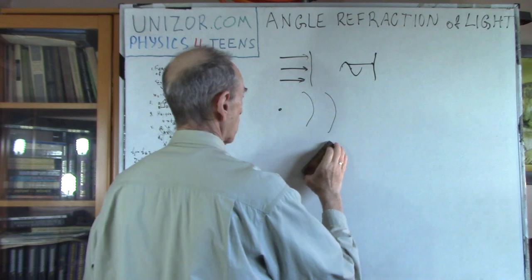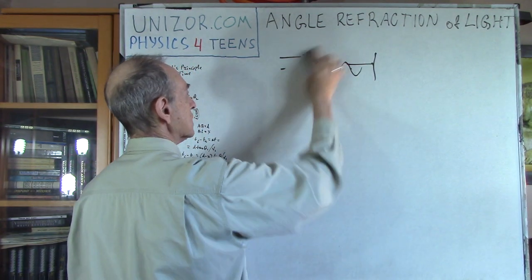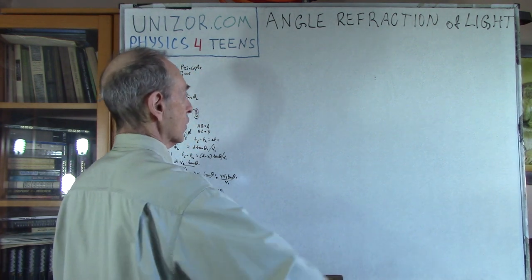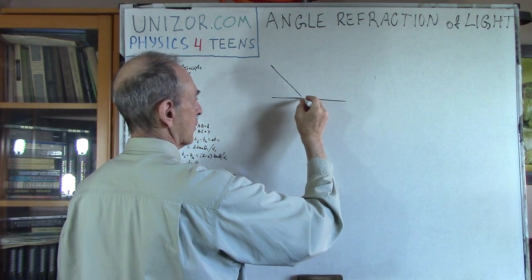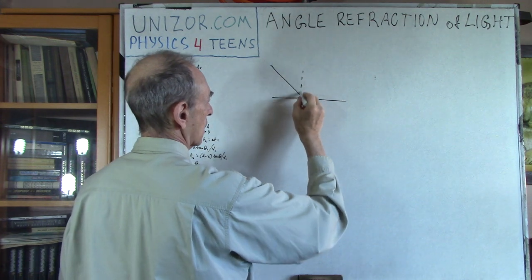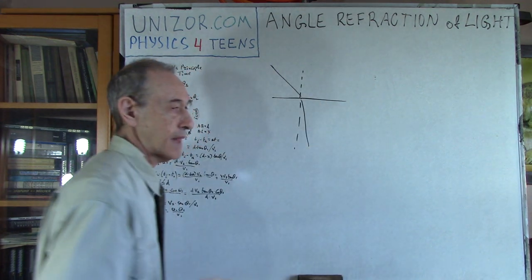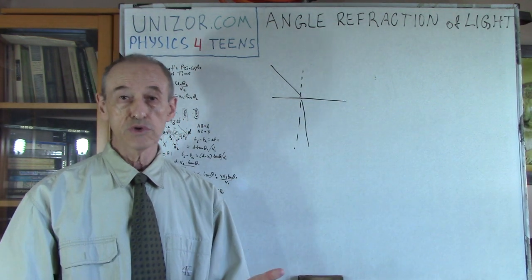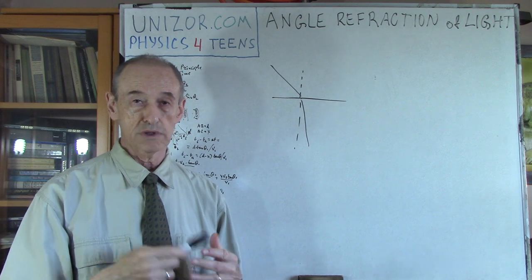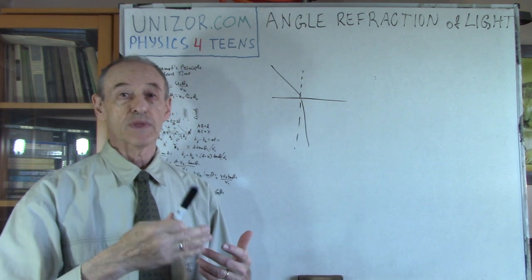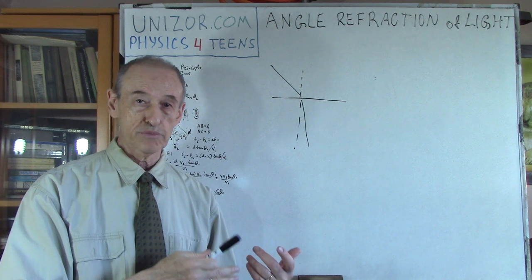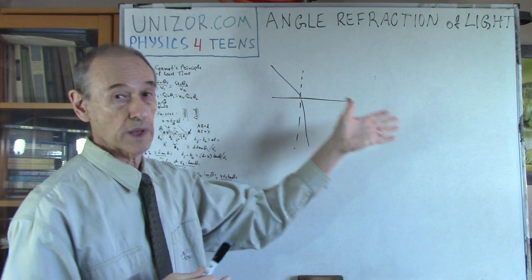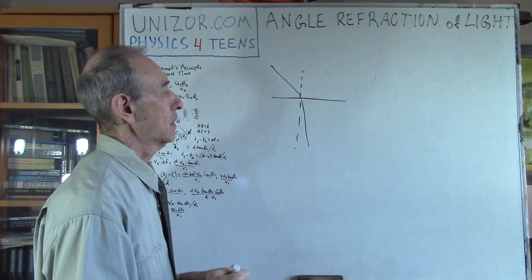When we consider refraction as before, we were talking about only one particular ray of light. Since we are now talking about the wave front and Huygens' Principle — which is about how to derive the next wave front if you have the previous wave front — we talk about more than one ray, because it's the whole wave.